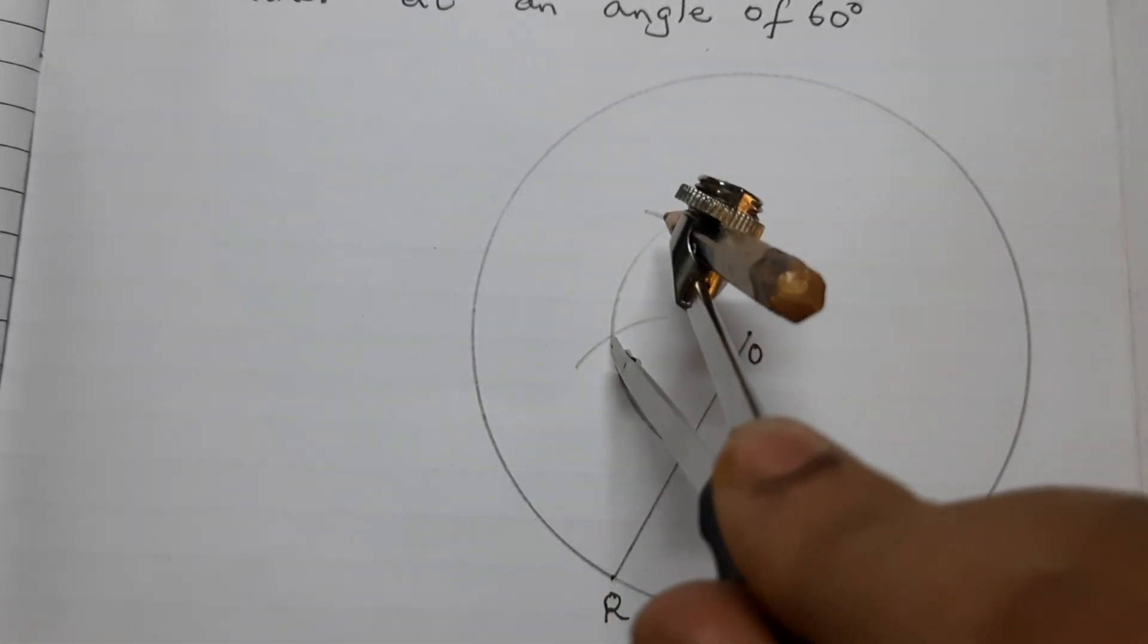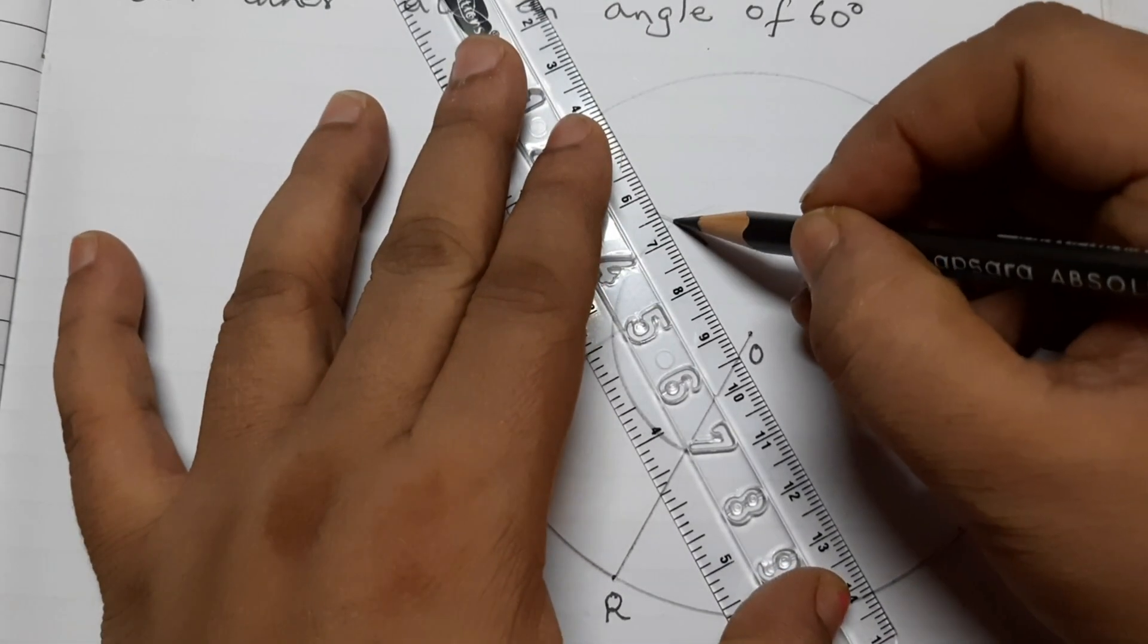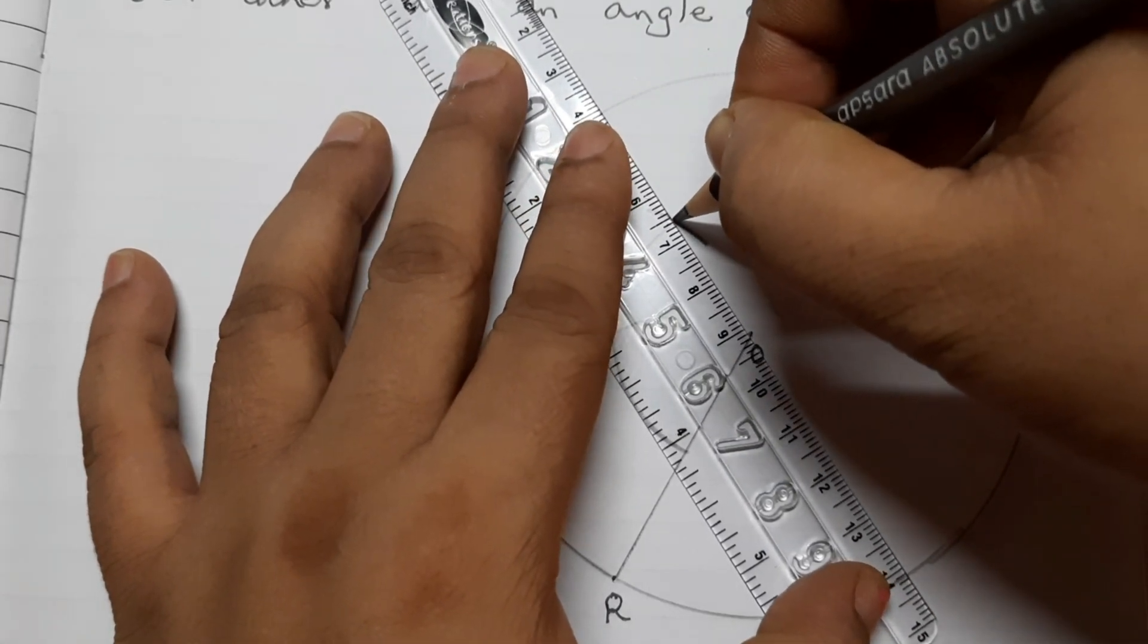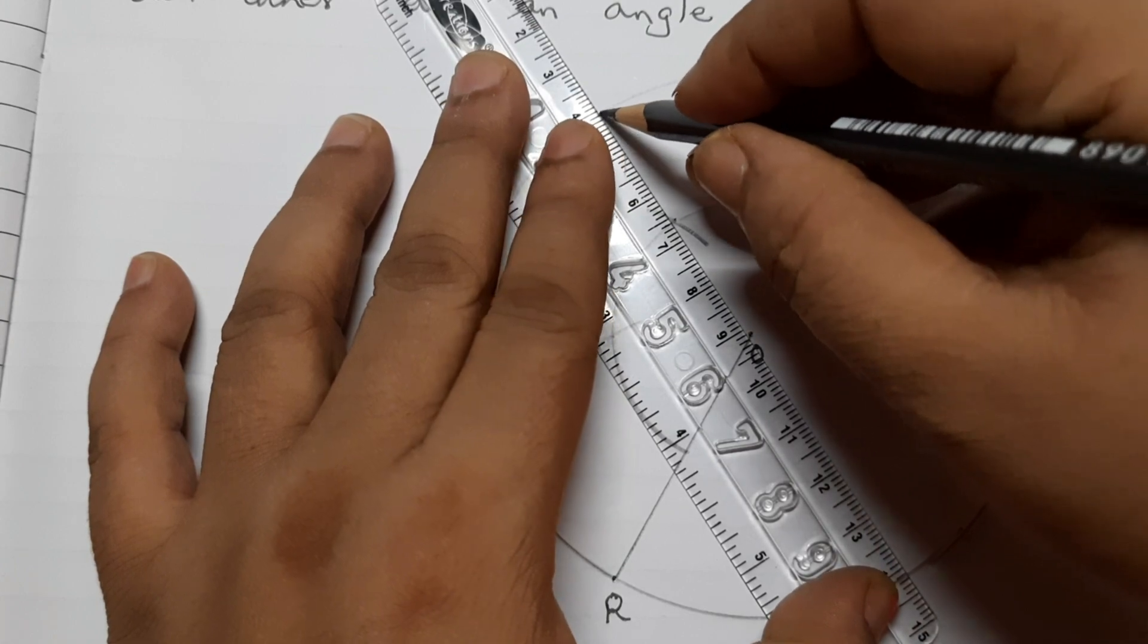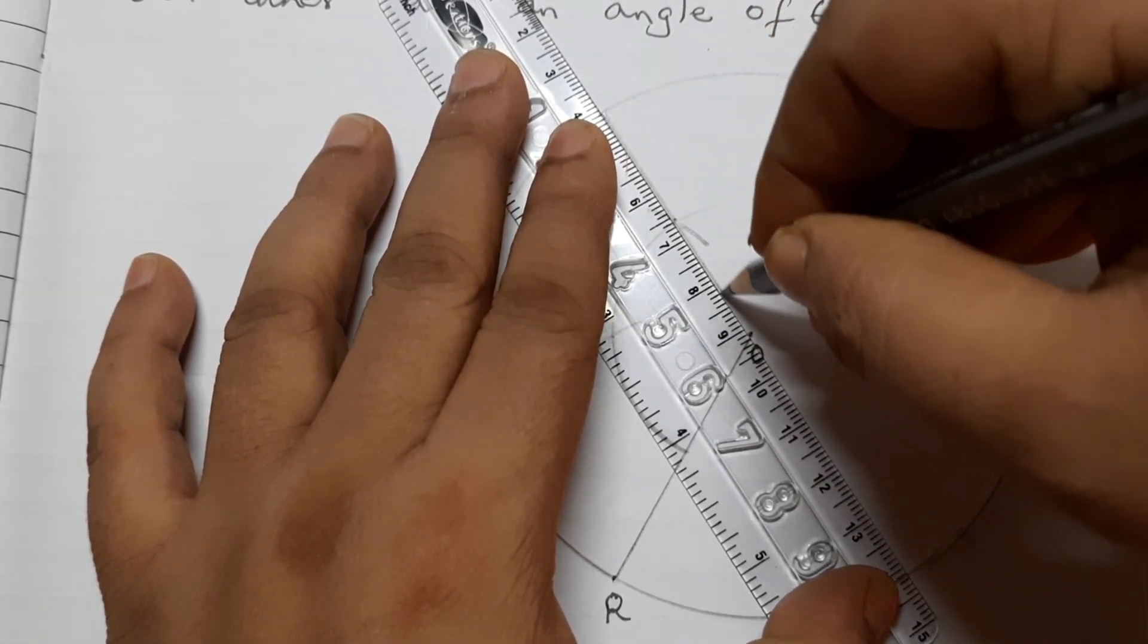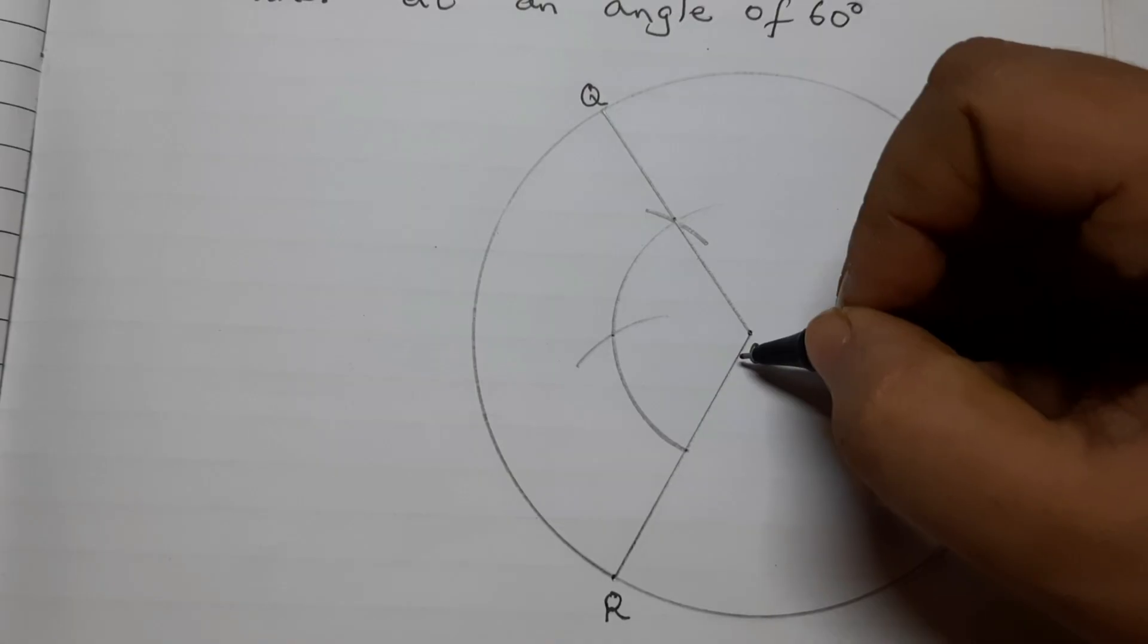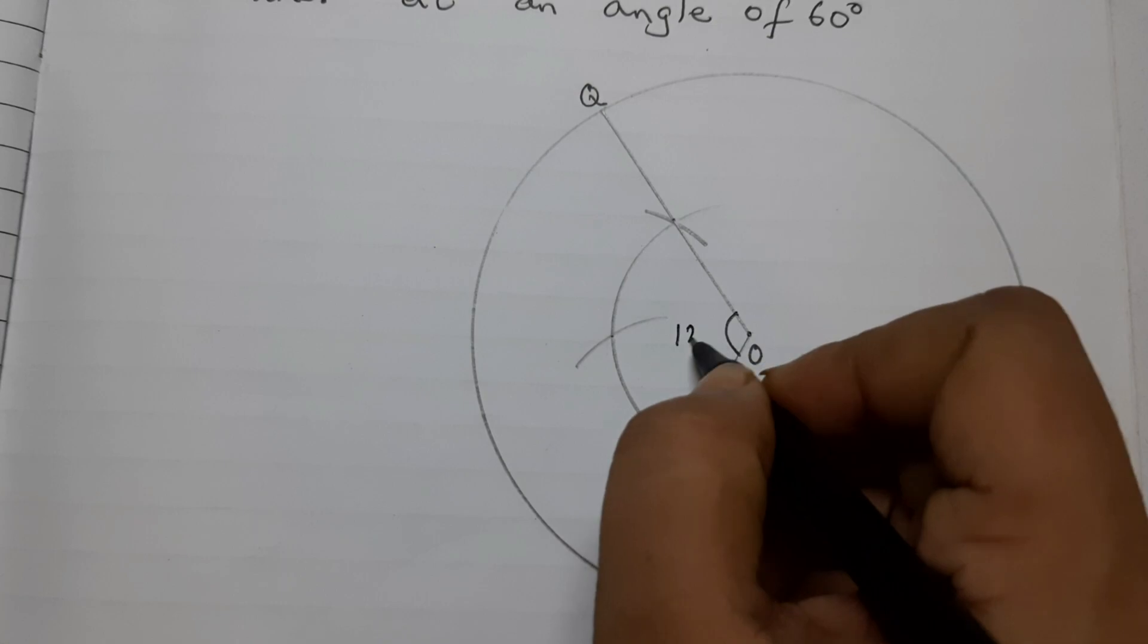This we have learnt in grade 6. Now draw O, Q passing through the intersection point. So we are drawing the radius O, Q. This angle here is 120 degrees.